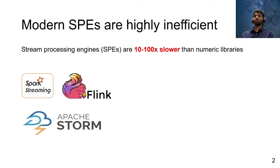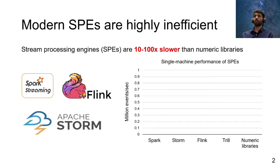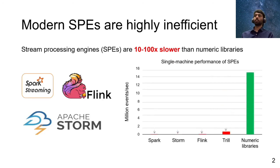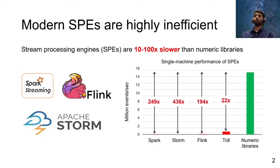Modern stream processing engines are extremely hardware inefficient. When we analyze the single machine performance of four state-of-the-art stream processing engines, we find that they are about one to two orders of magnitude slower compared to corresponding implementations available in numeric libraries.